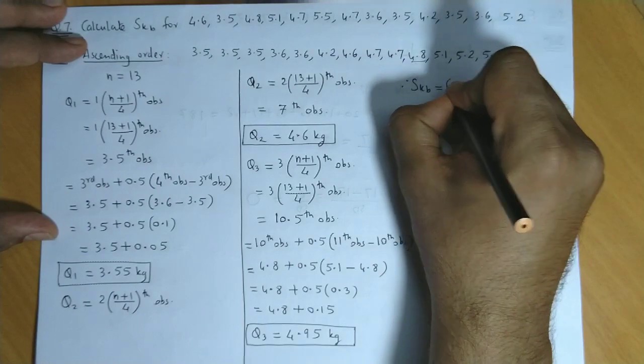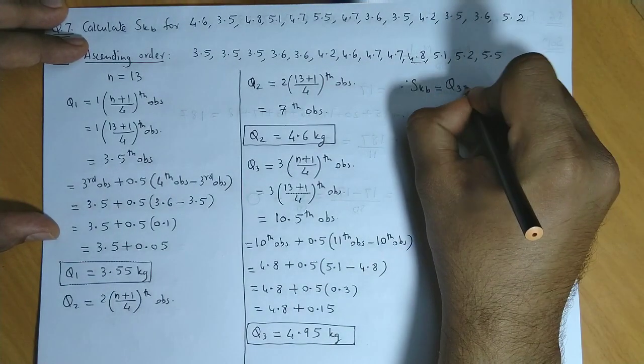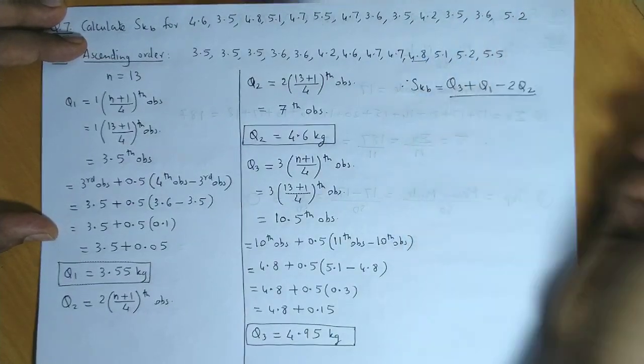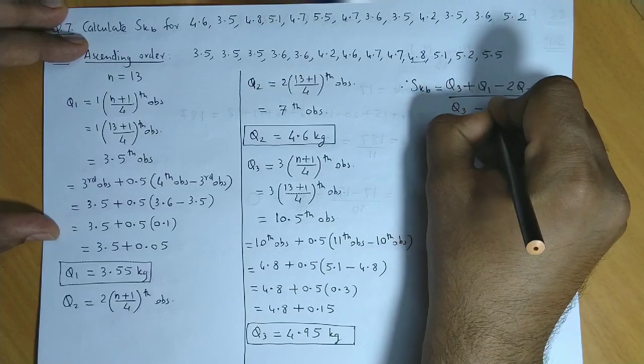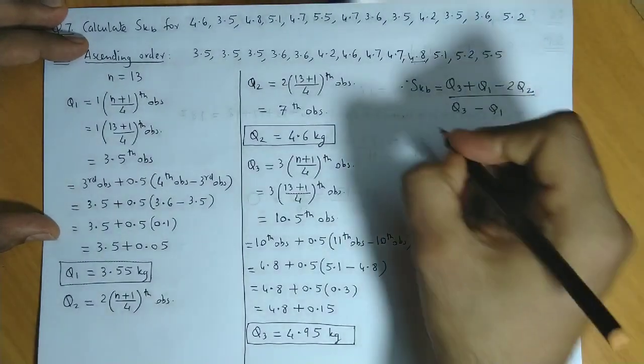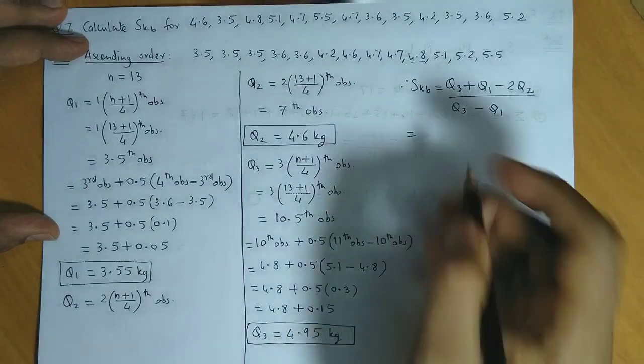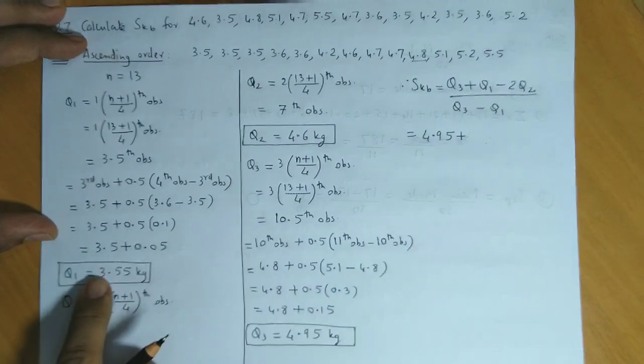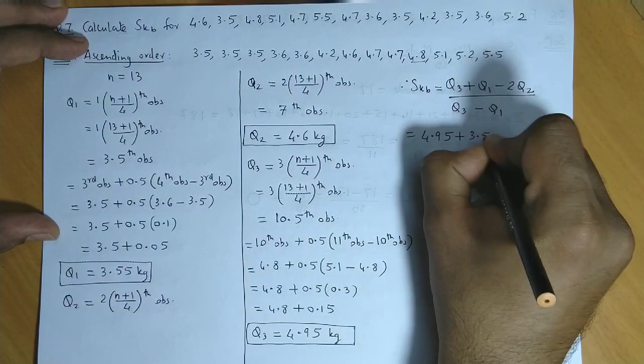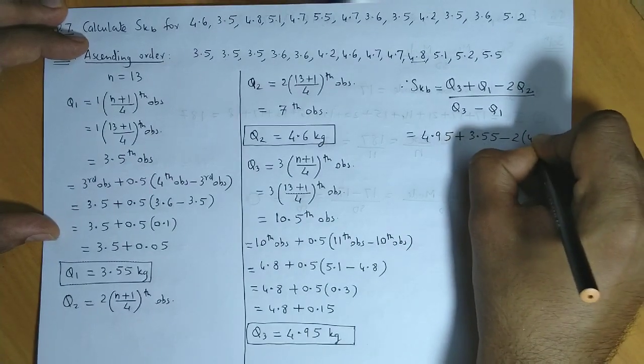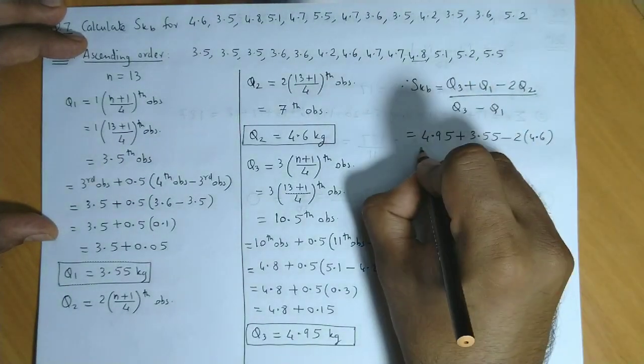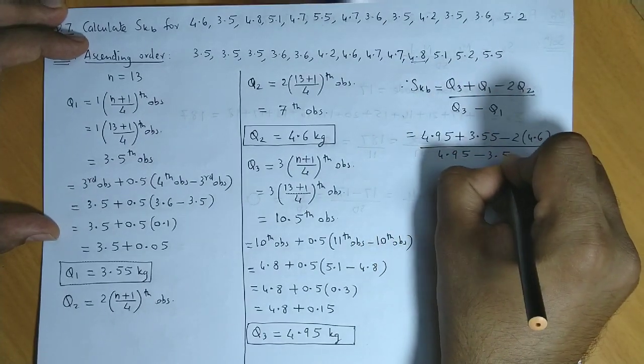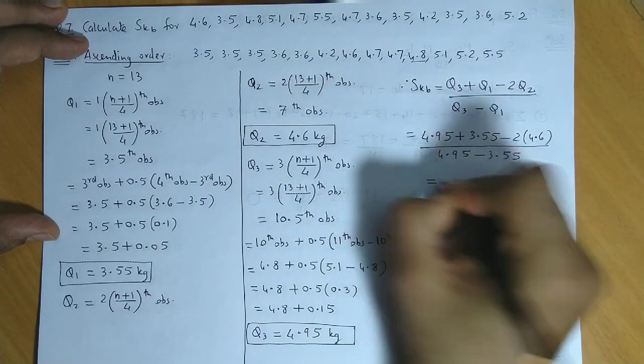SKB value is Q3 plus Q1 minus 2 times Q2 divided by Q3 minus Q1. Now the value of Q3 is 4.95, Q1 value is 3.55 minus 2 times Q2 that is 2 times 4.6, and denominator 4.95 minus 3.55.